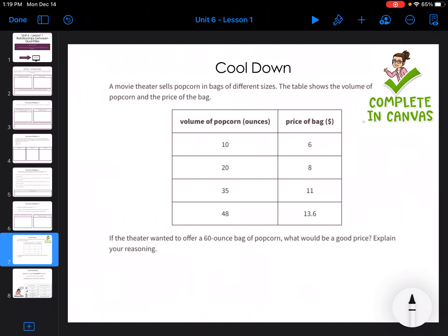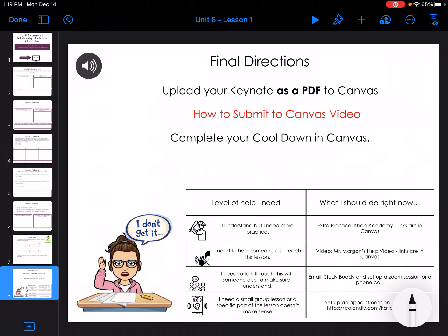All right. For your cool down today, you are going to come up with what a good price would be for the popcorn. You're going to choose one of my options and a reason why. You need to think what would make sense in this situation. It's not going to be perfectly correct. This is more of a guesstimate than an actual answer. And for your final directions, if you need more help, get on Canvas. If you need to hear somebody else, Mr. Morgan teaches it. If you need help from another peer, email a study buddy. And if you have specific questions or some part doesn't make sense, make an appointment with me on Calendly. Thanks so much. Have a great day.